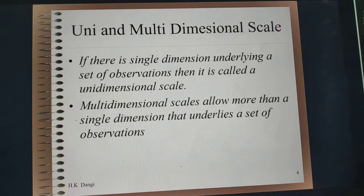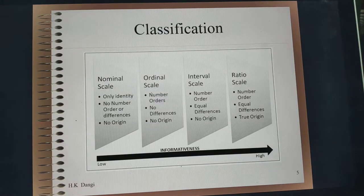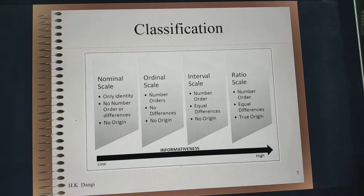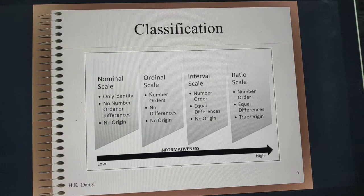In this particular lecture I will restrict my discussion to multidimensional scale. Scales based on their property can be defined as a nominal scale, ordinal scale, interval scale, or ratio scale — or some people say nominal data, ordinal data, interval data, and ratio data.